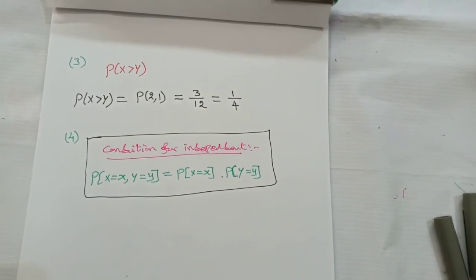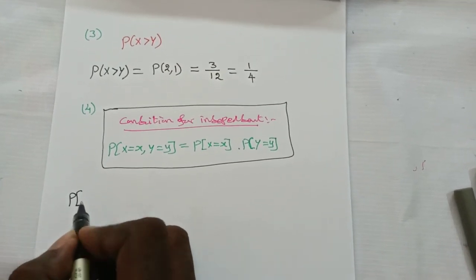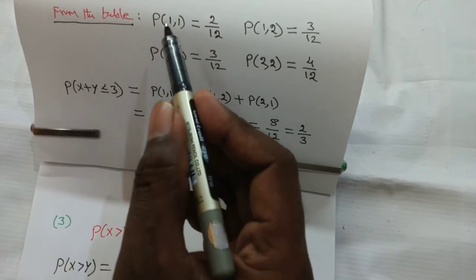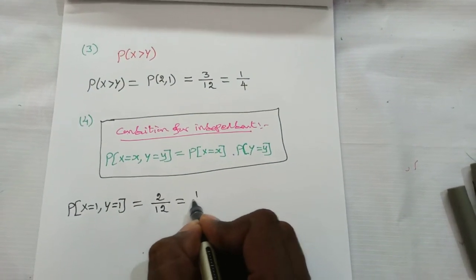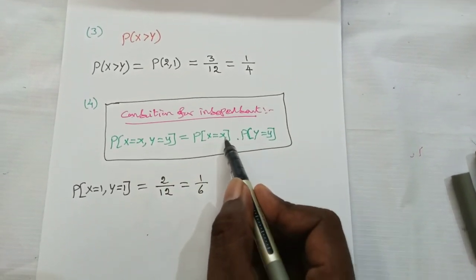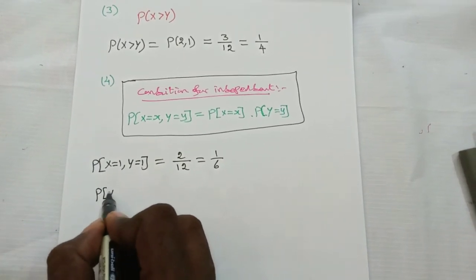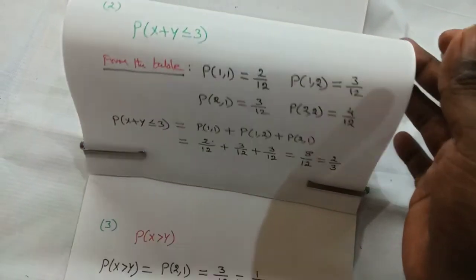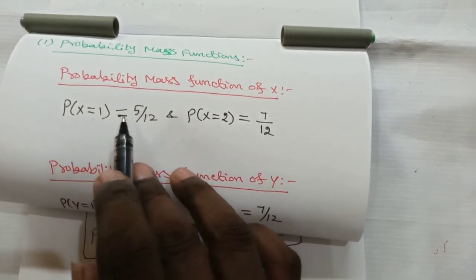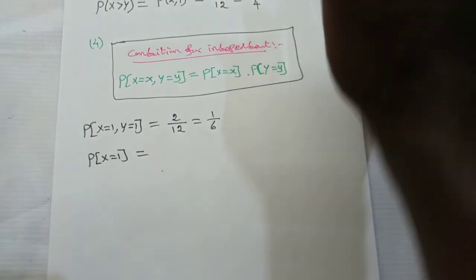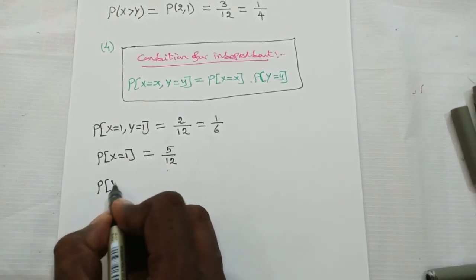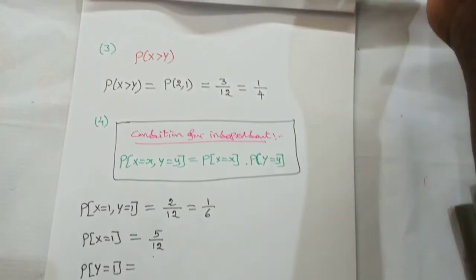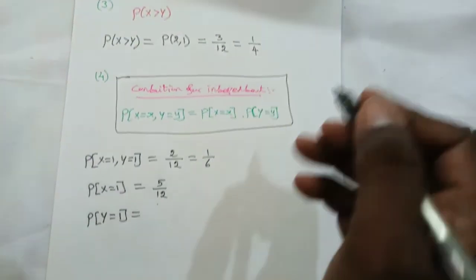Verifying with the first term p(1,1): the joint probability is 2/12 = 1/6. Now p(X=1) · p(Y=1) = 5/12 × 5/12 = 25/144. Since 1/6 ≠ 25/144, the condition is not satisfied. Therefore X and Y are not independent.